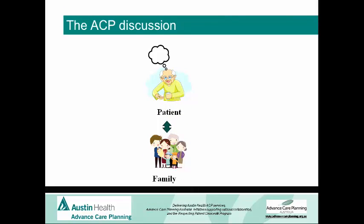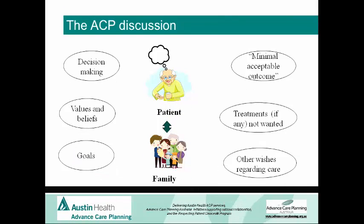When we have an advanced care planning discussion, we hopefully have the patient and the family, and then we have a whole lot of things that are part of the conversation. We're including goals, values, beliefs. We talk very much about minimal acceptable outcome, and I think this is much more important than the specific treatment to get there. We tend to talk about what we're hoping the treatment will achieve, rather than do they want inotropes, do they want intubation, do they want this or that — because we have enough trouble as healthcare professionals working it out without trying to get our patients and family to navigate through the specific treatments. We're also getting very involved in other wishes regarding care, including where people might choose to be if they have a choice, and that's not to say that dying in hospital is bad, but there may be other places that people may prefer to be.